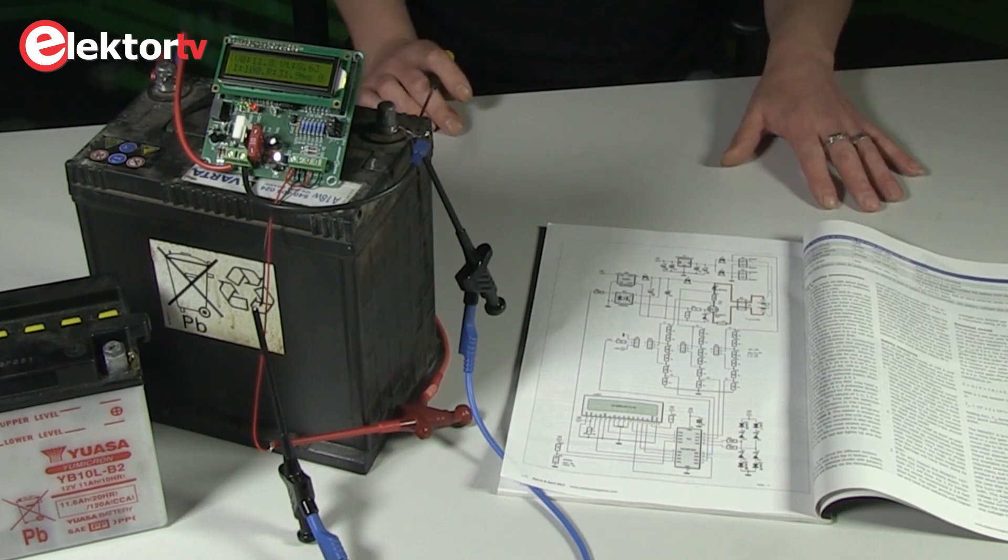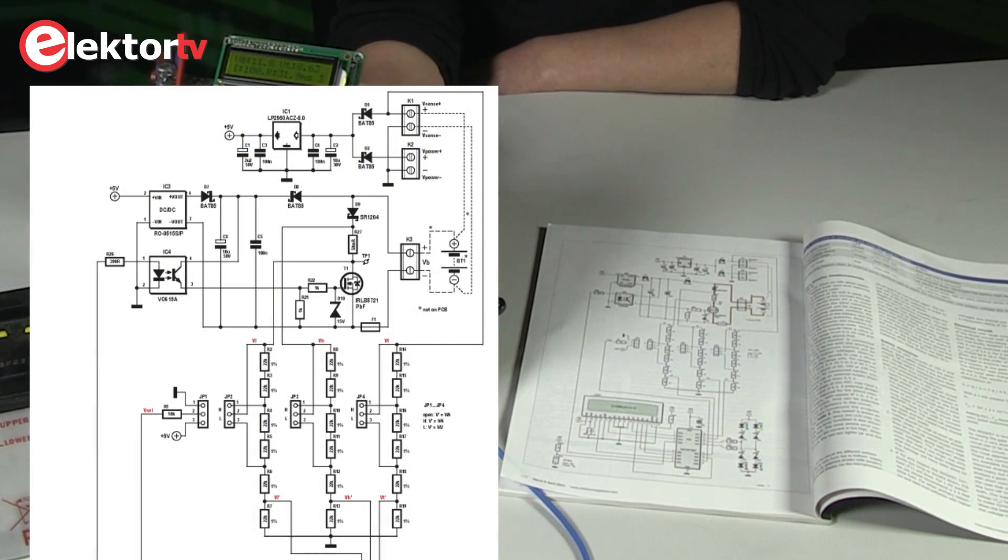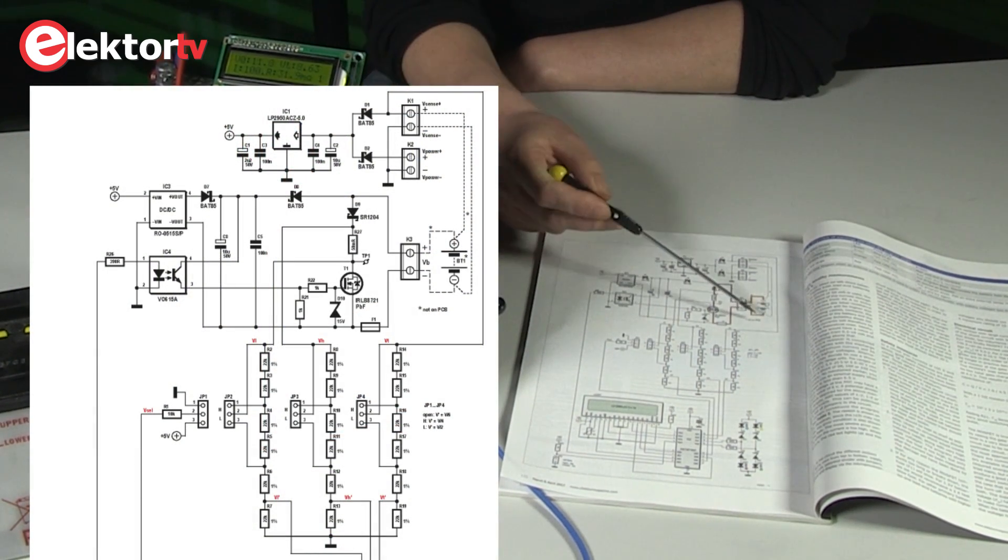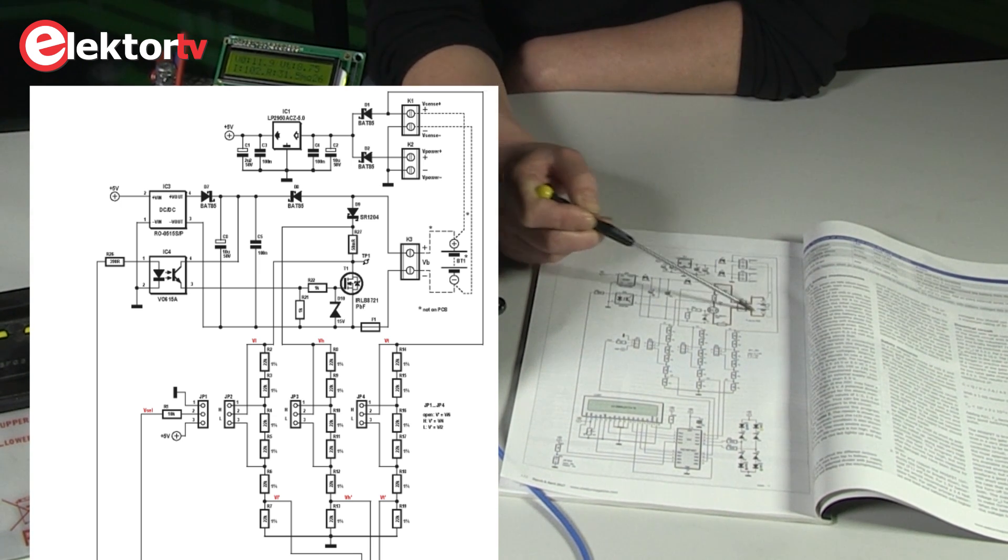Well here we're going to have a look at the schematic of the battery activator. The battery is connected over here. You can see these wires for the shunt circuit.